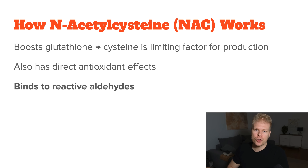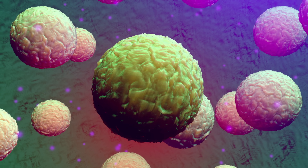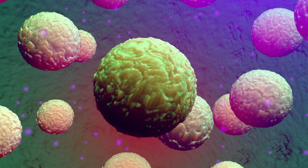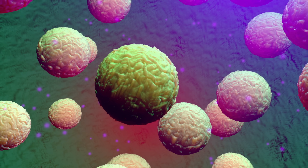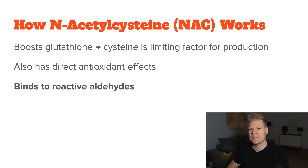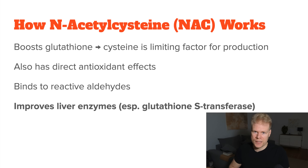Third, NAC can bind to certain harmful compounds, especially reactive aldehydes. These are byproducts your body creates when exposed to things like cigarette smoke, alcohol, pollution, and processed food additives. By binding to these aldehydes, NAC can neutralize them and make them easier for your body to eliminate. Fourth, it also helps improve liver enzymes. NAC helps upregulate glutathione S-transferase, the enzyme responsible for attaching toxins to the glutathione molecule.